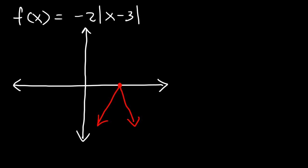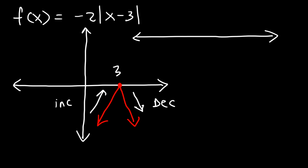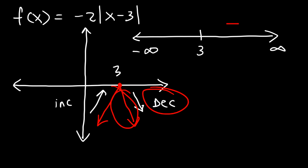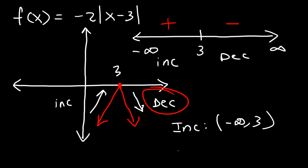With this information, we can tell where the function is increasing and decreasing. It's increasing when the function is going up from left to right, and decreasing when it's going down. The function is increasing on the left side and decreasing on the right side. On the number line, it changes at x equals 3. To the right of 3 the function is decreasing and the slope is negative; to the left it's increasing and the slope is positive. So the function is increasing from negative infinity to 3, and decreasing from 3 to positive infinity.